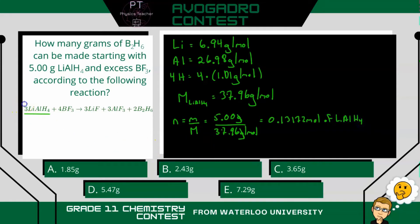We'll get 0.13172, and I'm going to round there to moles of lithium aluminum hydride. So the next step is to use our coefficients for our limiting reactant and what we're looking for to figure out the amount of moles that we're going to have of diborane.